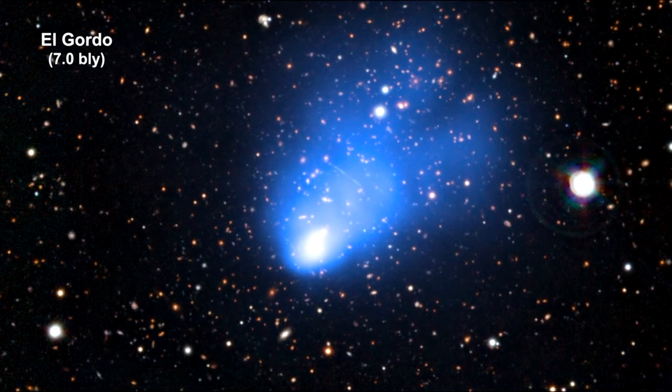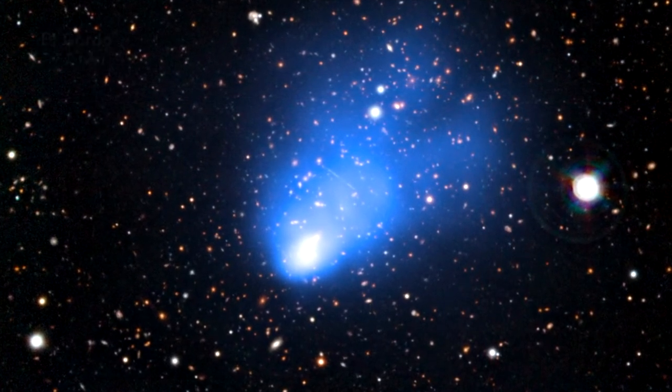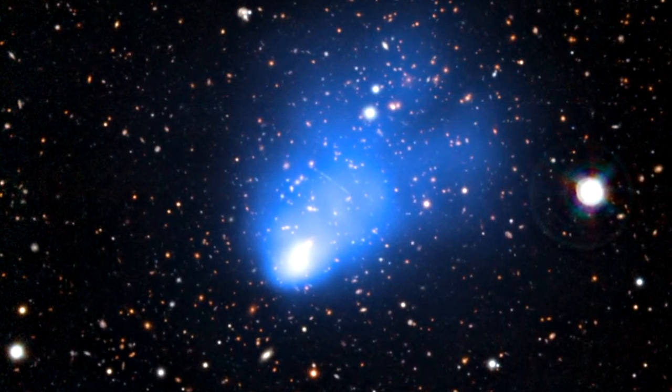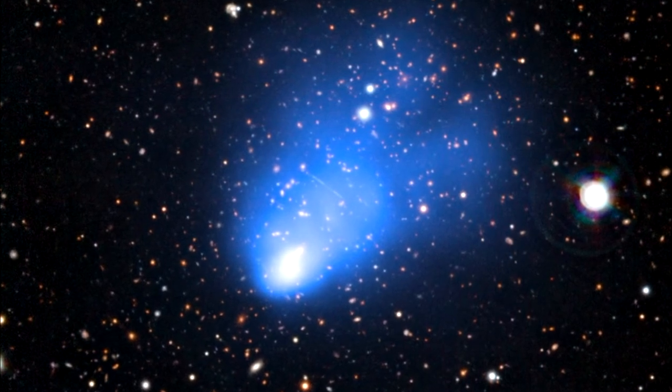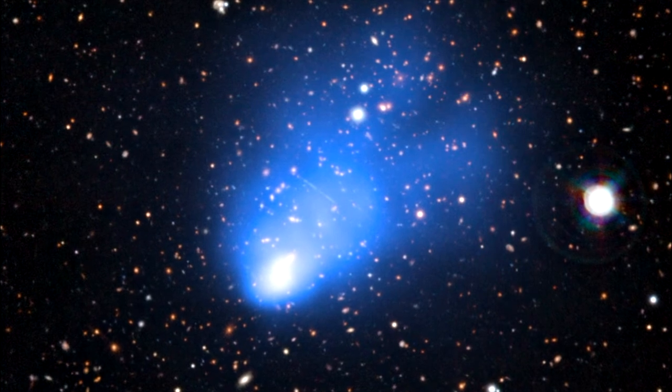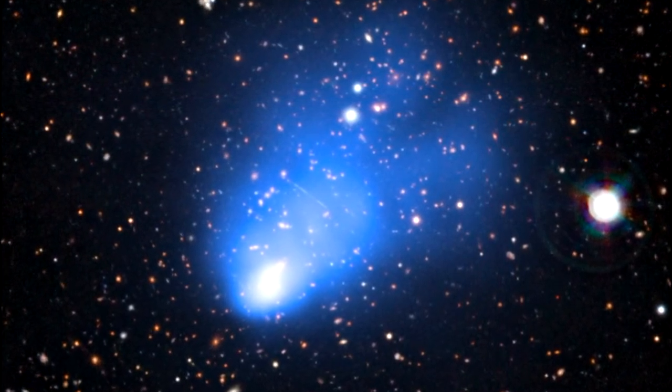This is a combined ESO very large telescope and Chandra image of the newly discovered galaxy cluster called El Gordo. It consists of two separate galaxy subclusters colliding. We are seeing what this cluster looked like when the universe was only half its current age.